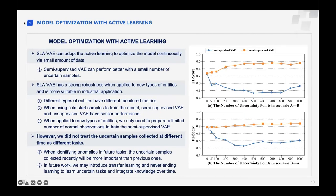Second, we discuss model optimization with active learning. To optimize the model continuously, we adopt active learning, which can learn and update models from a small amount of data. Experiments show that semi-supervised VAE performs better with a small number of uncertain samples. SIEVAE also shows strong robustness when applied to new types of entities, requiring only a limited number of normal observations to train the semi-supervised VAE. However, we do not treat uncertain samples collected at different times as different tasks. In future work, we may introduce transfer learning and never-ending learning to handle evolving tasks and integrate knowledge over time.